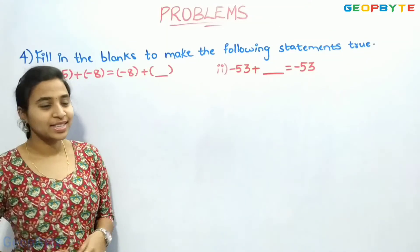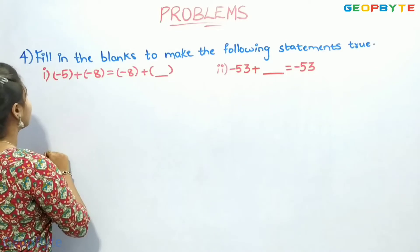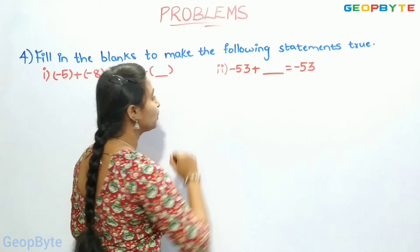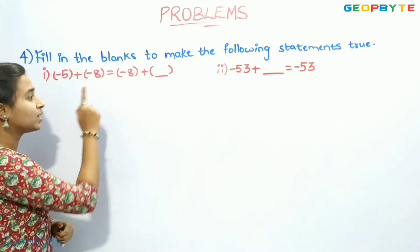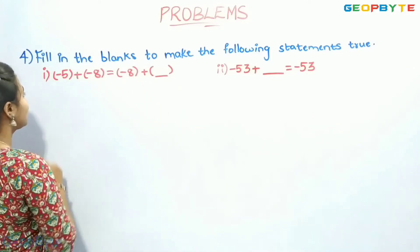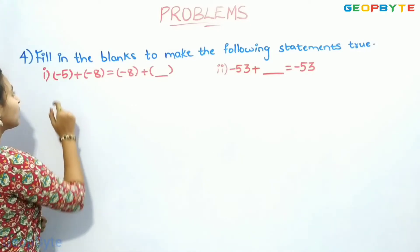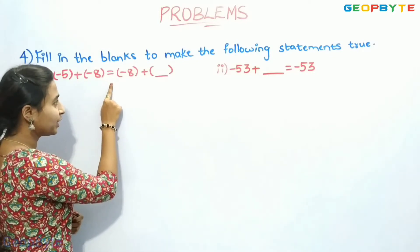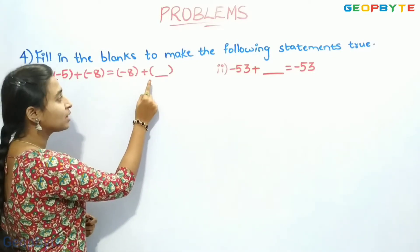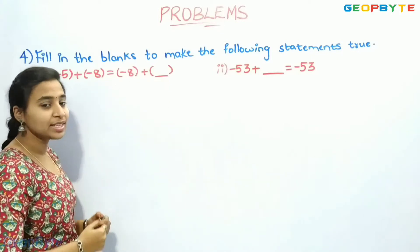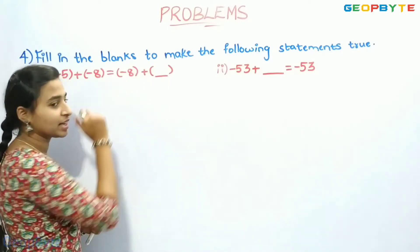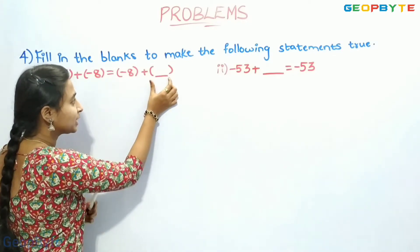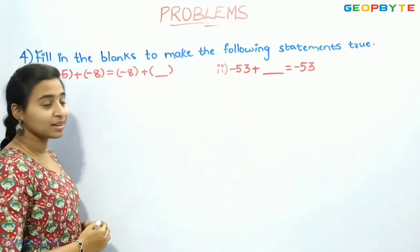Now, let us see the fourth question. Fill in the blanks to make the following statements true. I have two questions here. Let us see the first one: minus 5 plus minus 8 is equal to minus 8 plus dash. We need to write the missing integer here. Let us assume this missing integer as x.